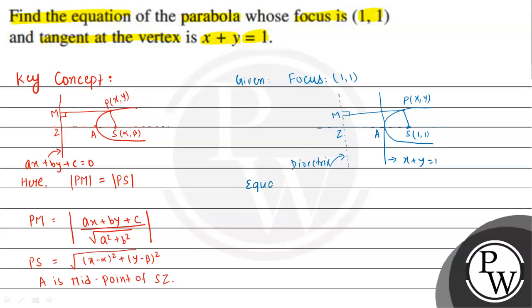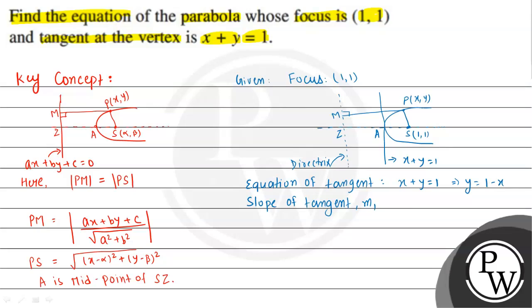The equation of the tangent at the vertex is x plus y equal to 1, which gives y equal to 1 minus x. The slope of the tangent, m1, is dy/dx, which equals minus 1. So the slope of the tangent is minus 1.